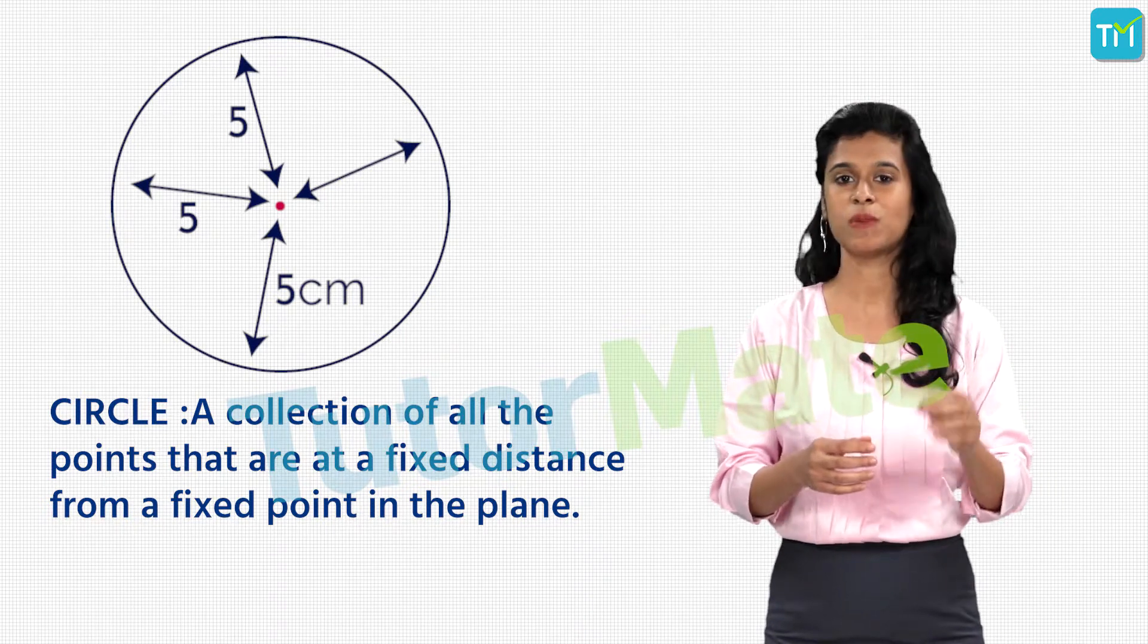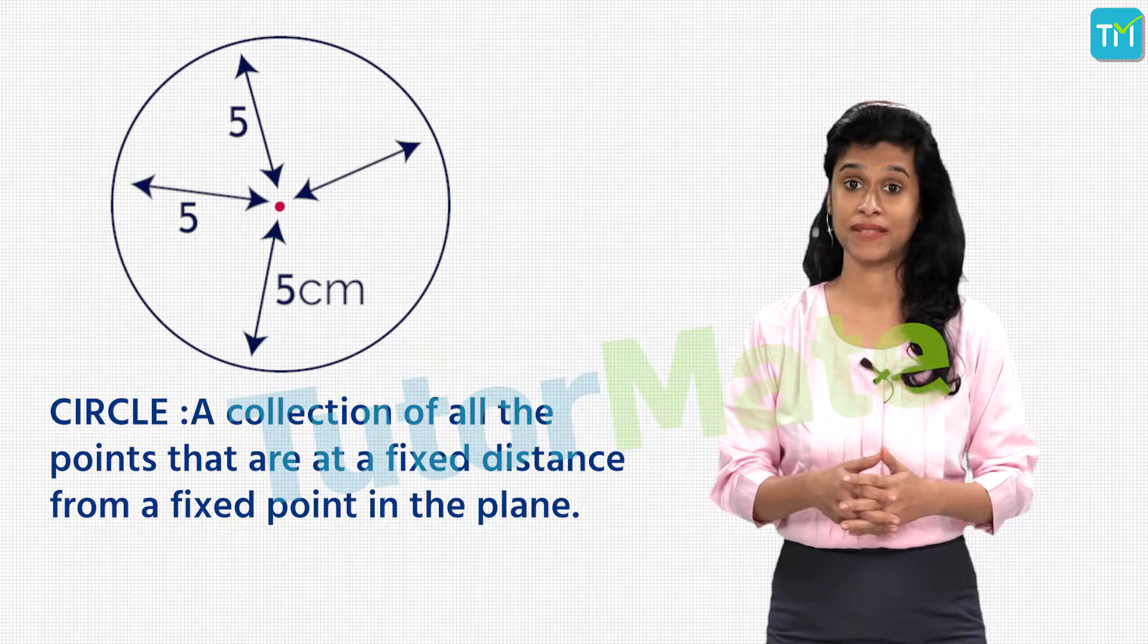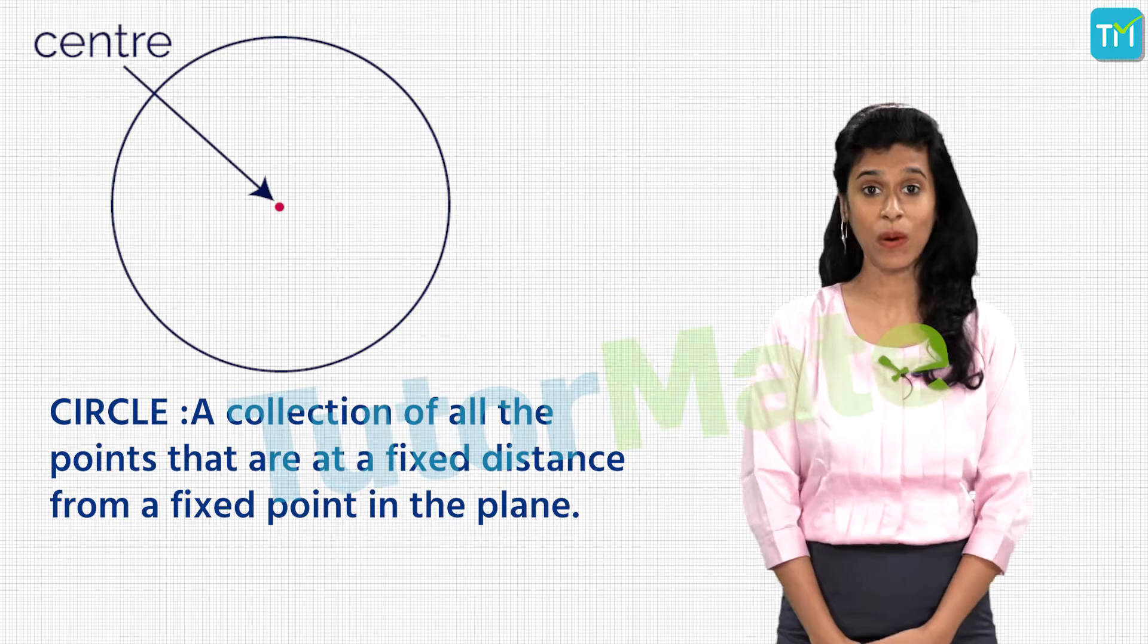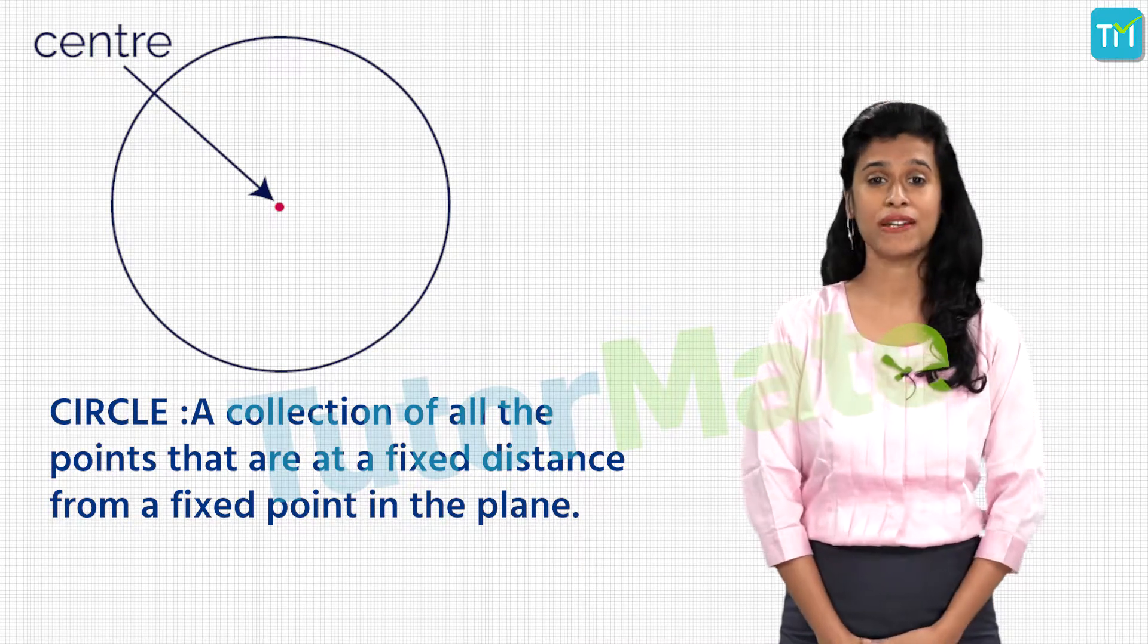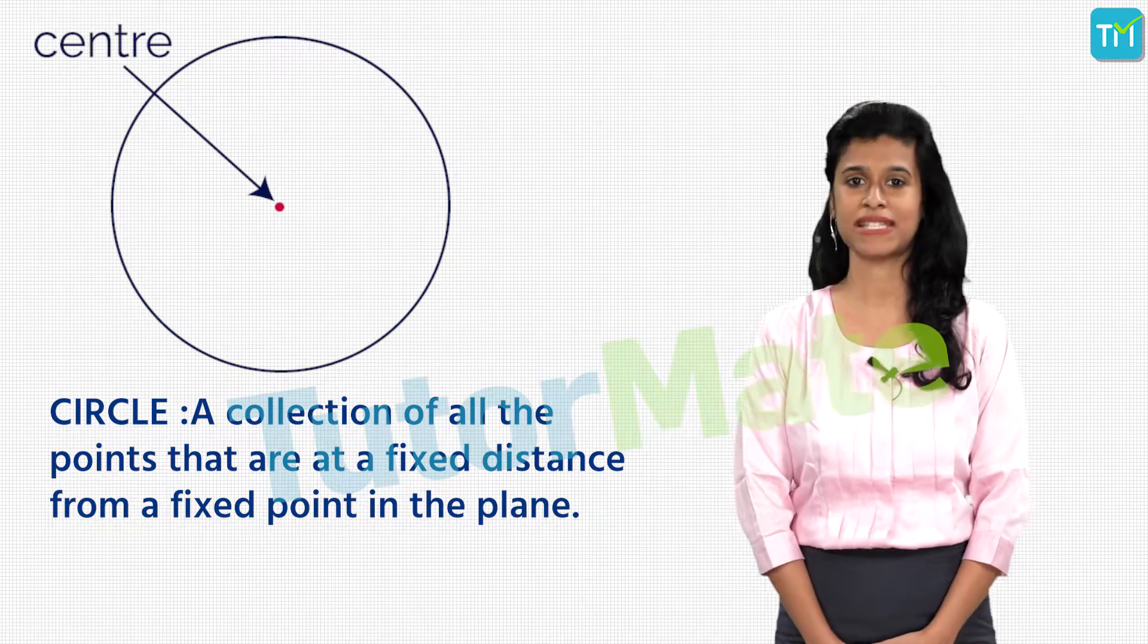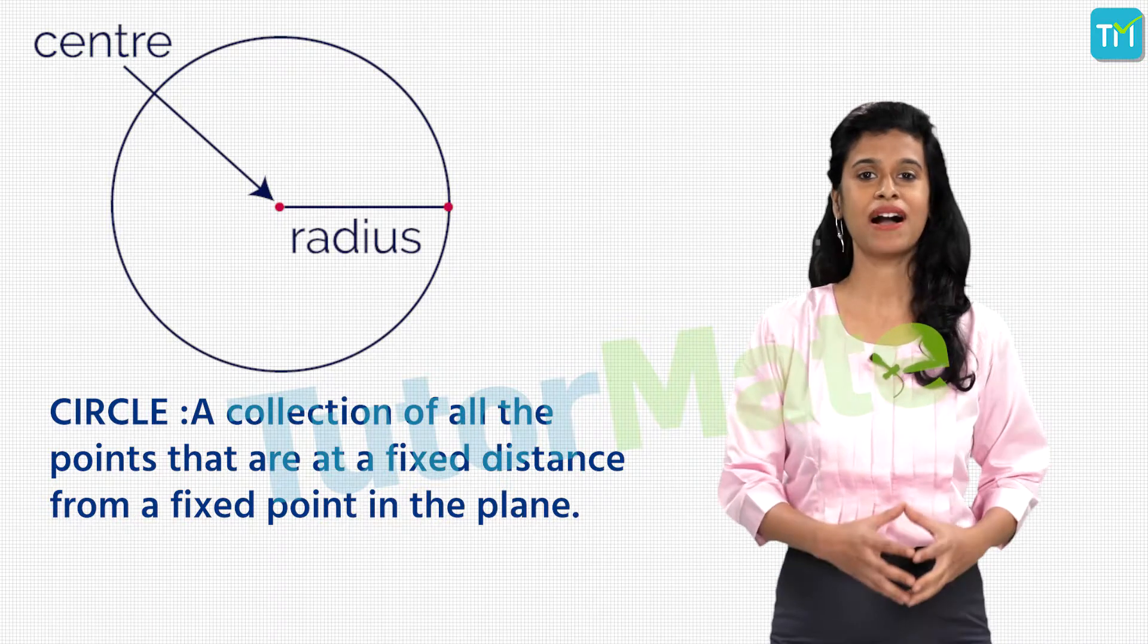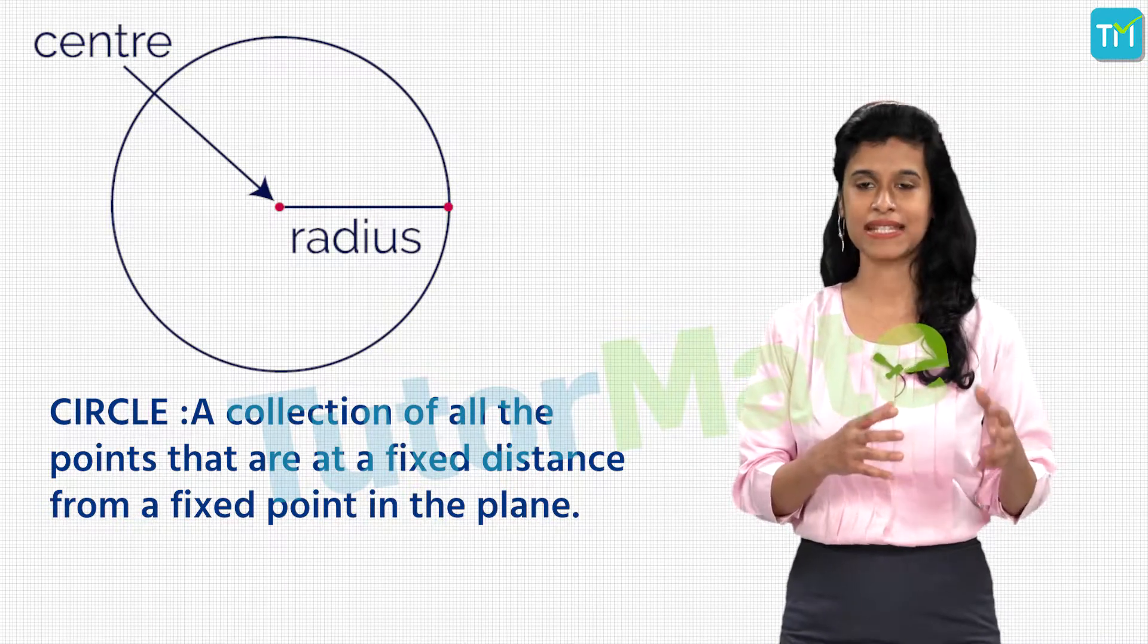This fixed point is called the center, while the fixed distance of every point on the circle from the center is called the radius. So if we mark A as a center here, we get the distance AP as the radius.